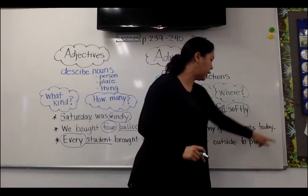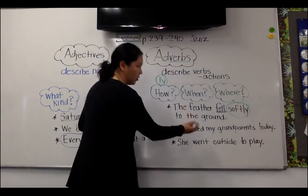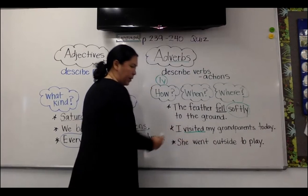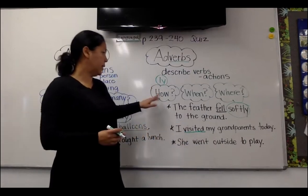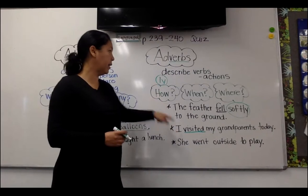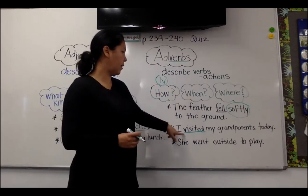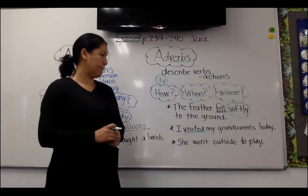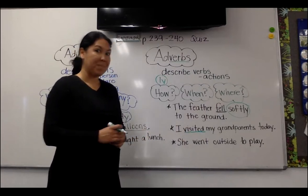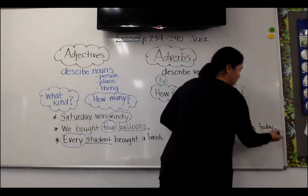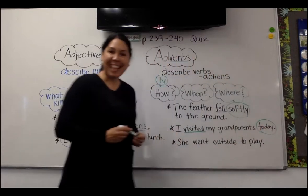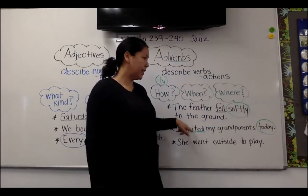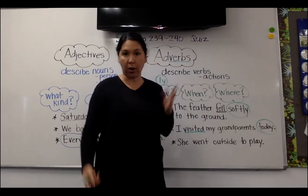Let's try the next one: I visited my grandparents today. Our verb is visited — that's my action. Does it tell how I visited, when I visited, or where I visited? Did anyone circle today? Today tells us when did she visit. She visited today — not yesterday, not tomorrow. Today.